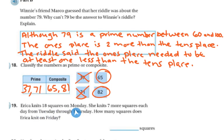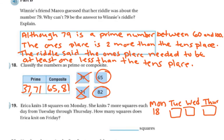Erica knits 18 squares on Monday. She knits 7 more squares each day from Tuesday through Thursday. How many squares does she knit by Friday? On Monday she has 18 squares. If I add 7 more, I get 25. Then I add 7 more, I get 32. Then I add 7 more, I get 39. So the answer is 39 squares.